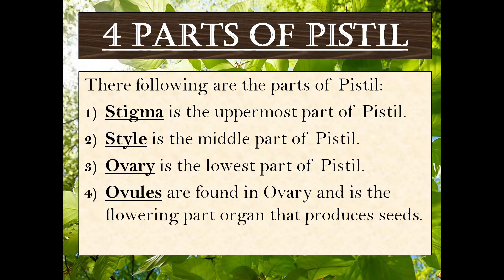There are four parts of pistil: stigma, style, ovary, and ovules. First, stigma — stigma is the uppermost part of the pistil. Second, style — style is the middle part of the pistil. Third, ovary — ovary is the lowest part of the pistil. Fourth, ovules — ovules are found in the ovary and are the flowering organ that produces seeds.